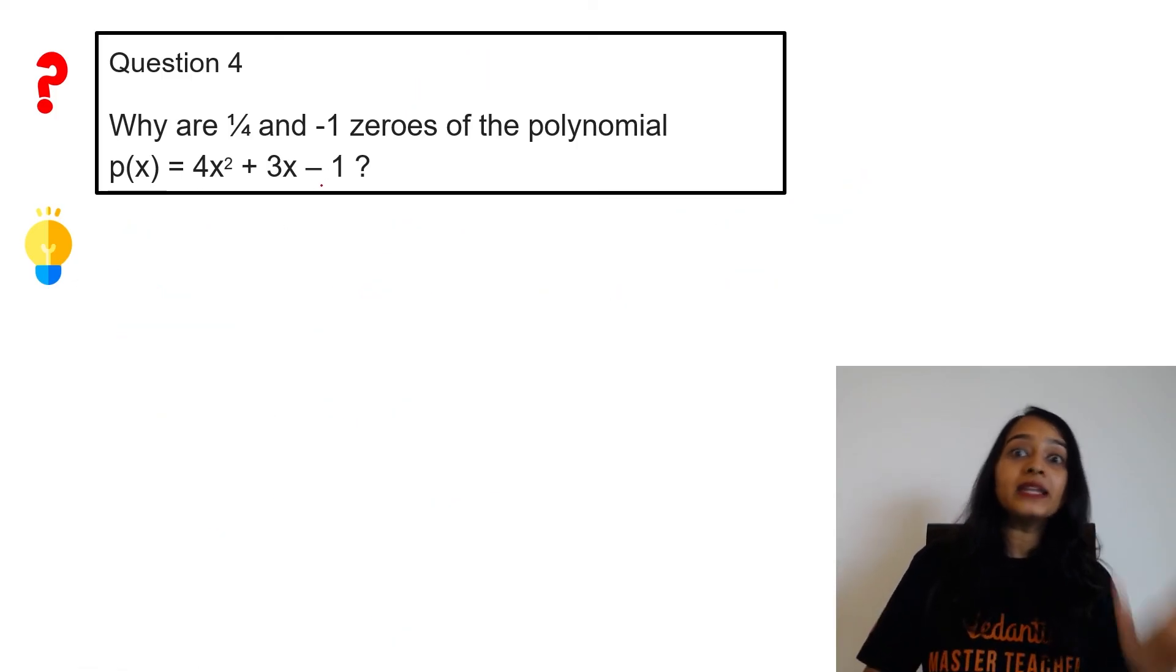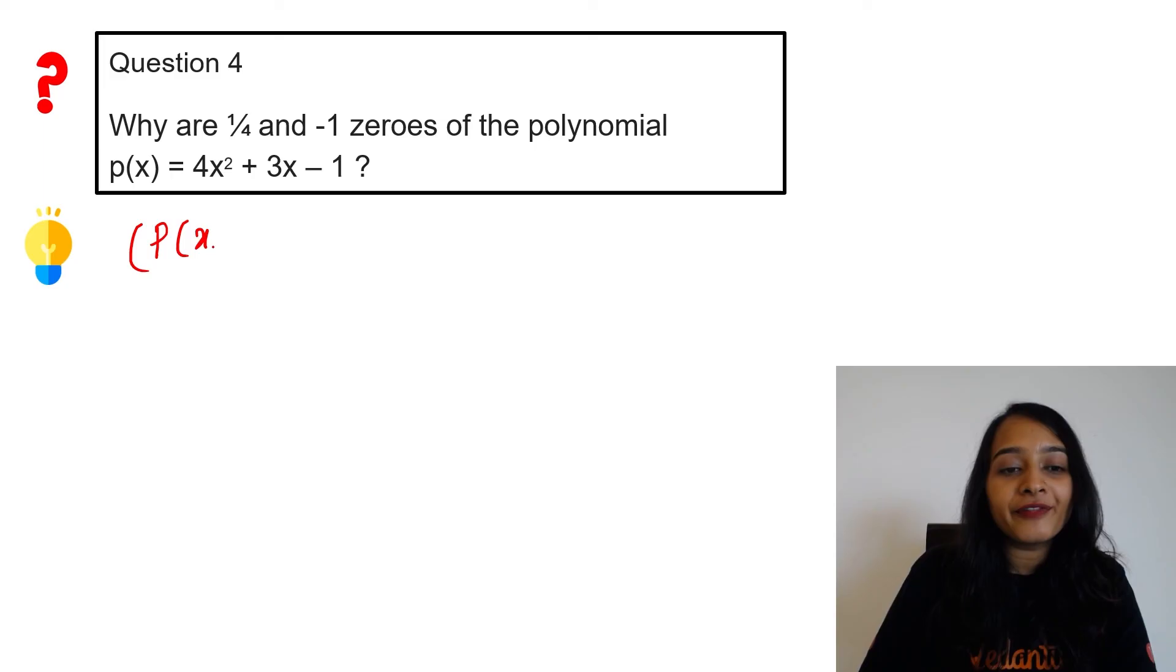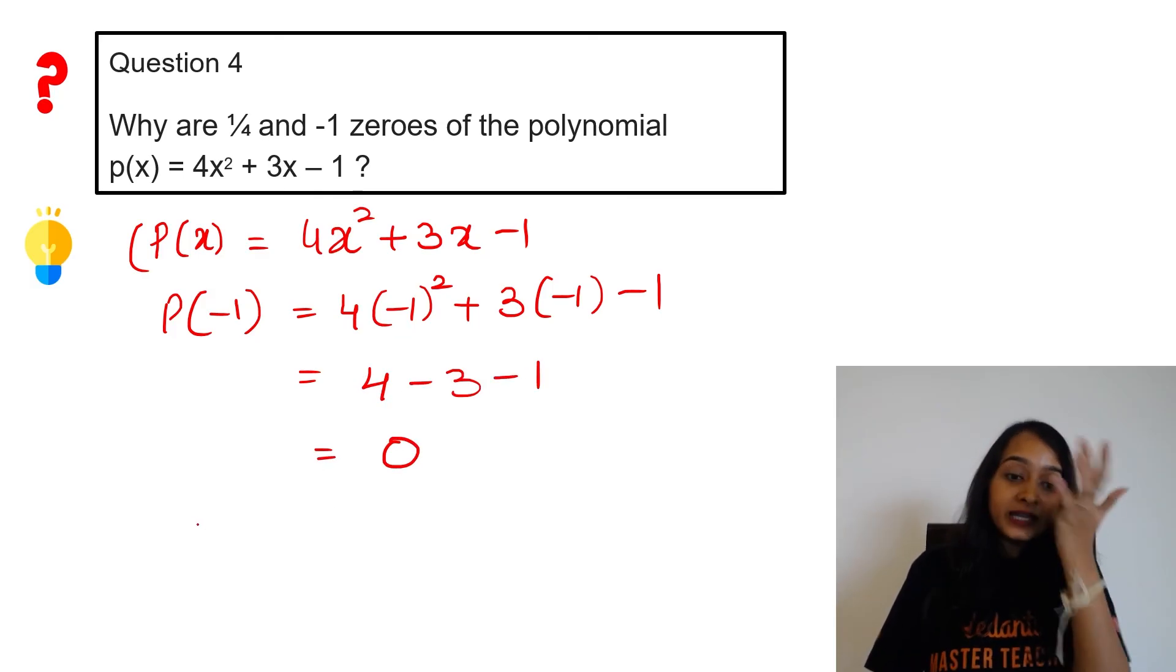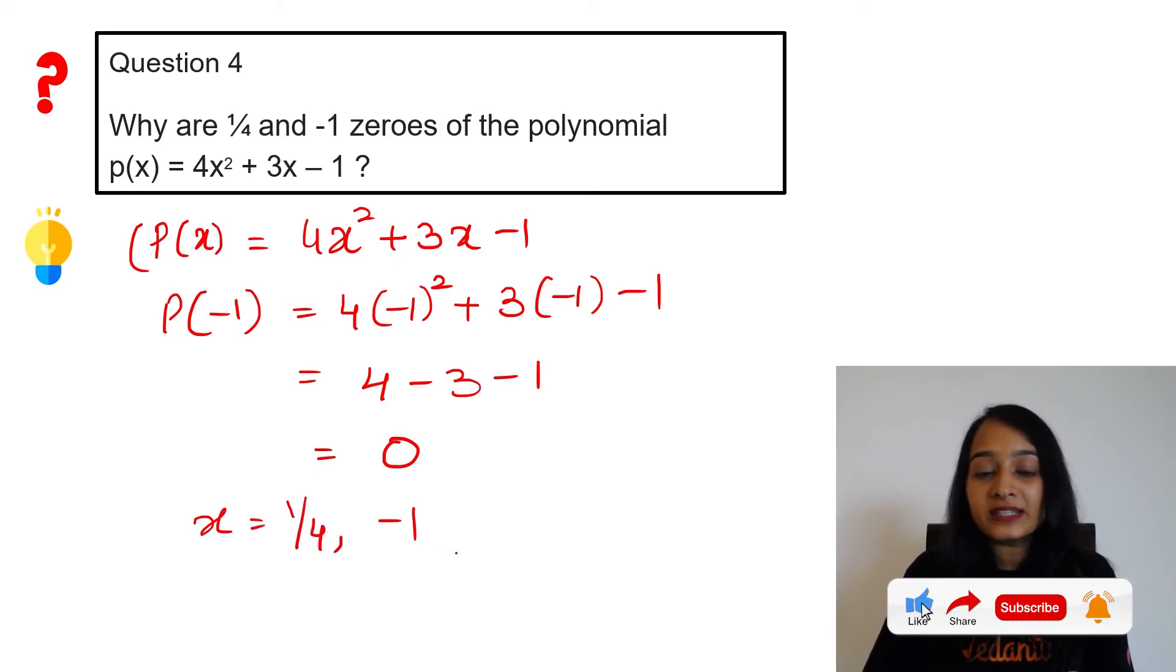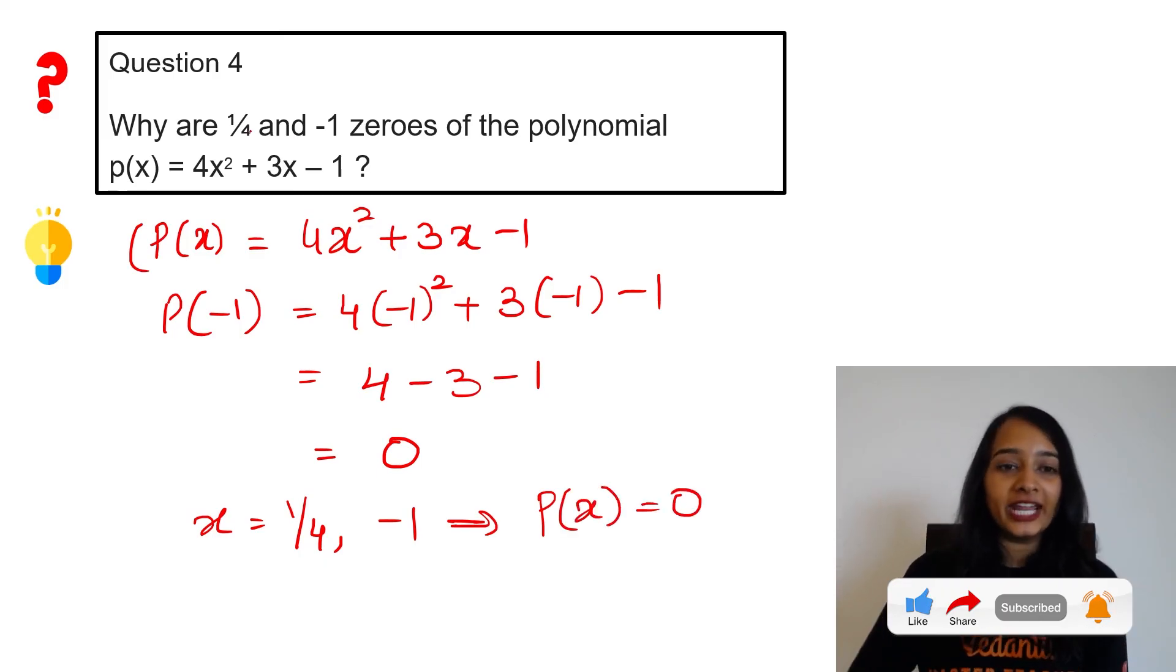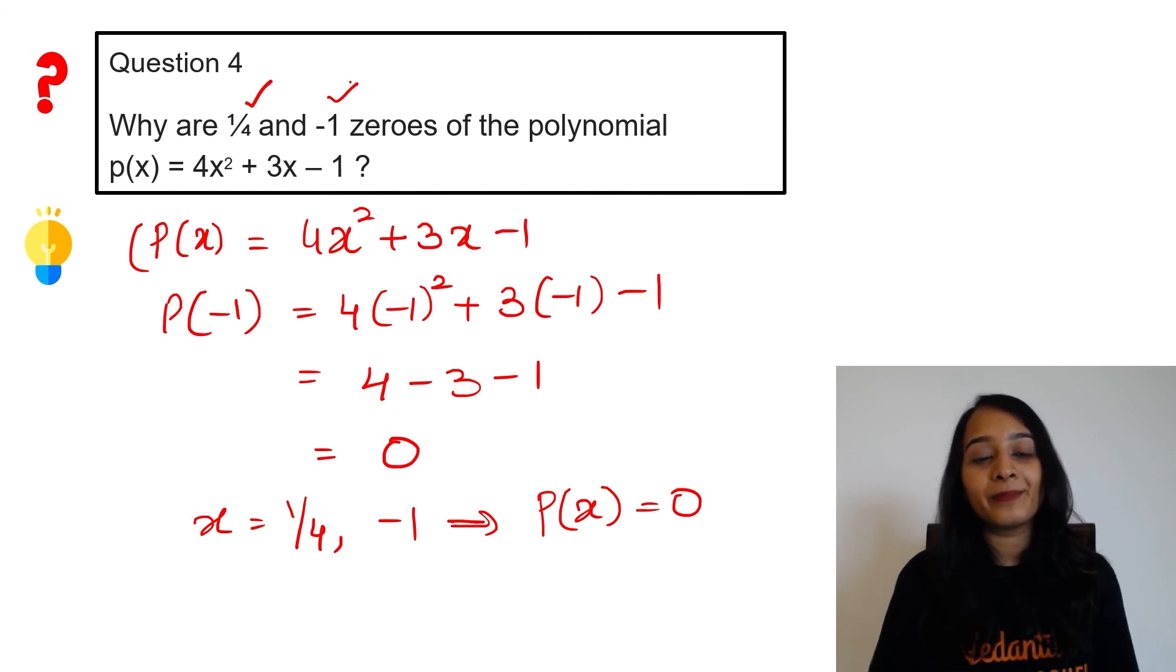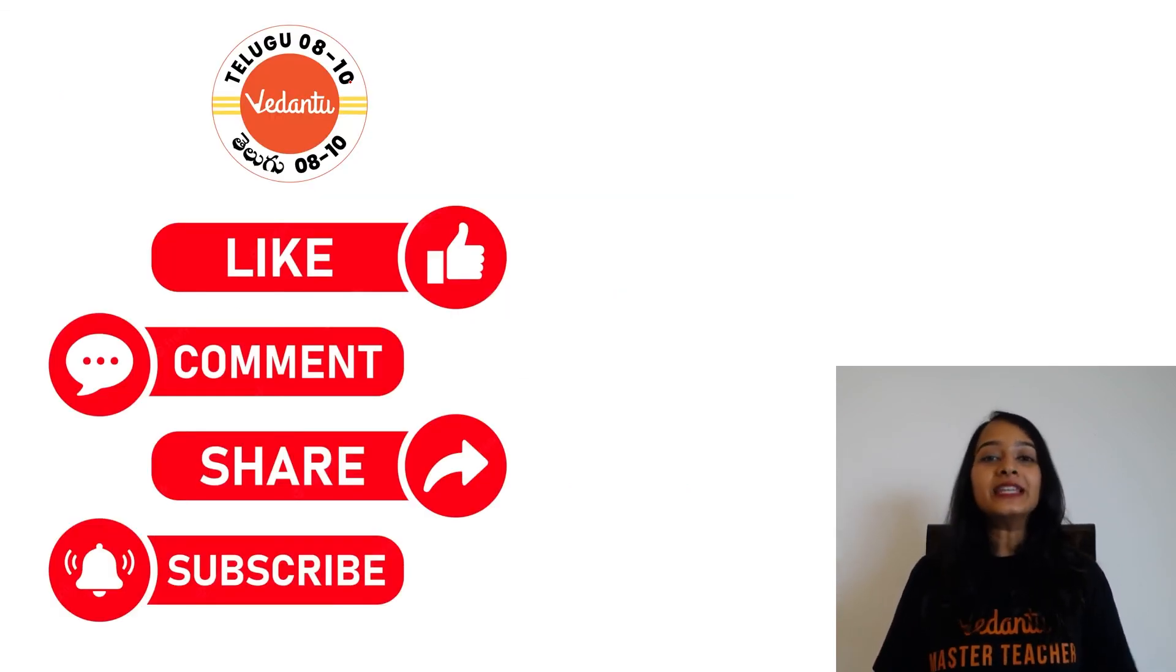Similarly, check for -1. p(x) = 4x² + 3x - 1. Check p(-1): 4(-1)² + 3(-1) - 1 = 4 - 3 - 1 = 0. So when we substitute x = 1/4 and x = -1, p(x) becomes 0 in both cases. Therefore, 1/4 and -1 are the zeros of the polynomial 4x² + 3x - 1. With this, we have come to the end of exercise 3.2.